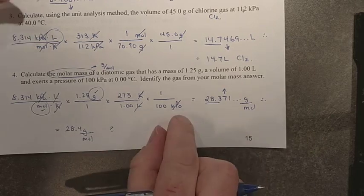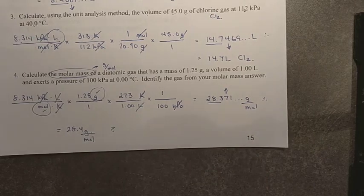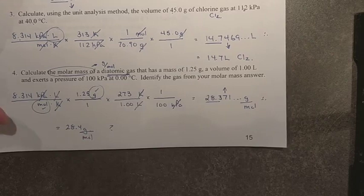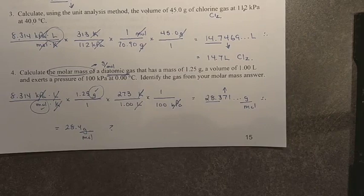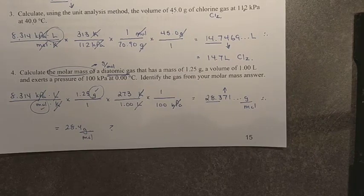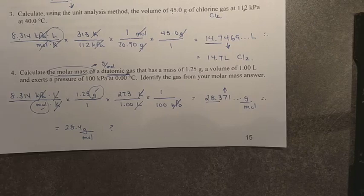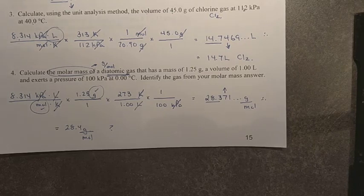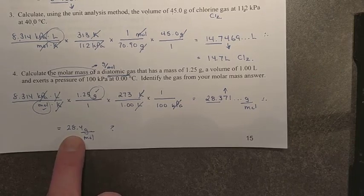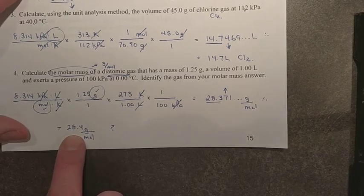Therefore, which gas do you think this is? We're told that it's diatomic. So which diatomic gas would have a molar mass close to 28.4 grams per mole? Hydrogen is 2.02. Nitrogen, when you look at that one, 14 per atom gives us 28. Oxygen, 16 per atom gives us 32. So this one at 28.4 should likely be nitrogen. Not so bad, huh?